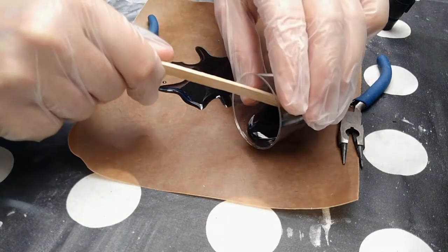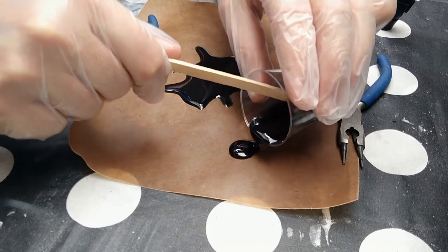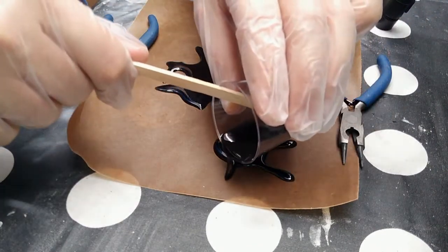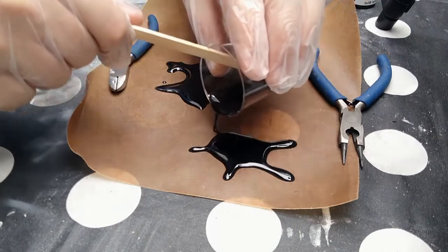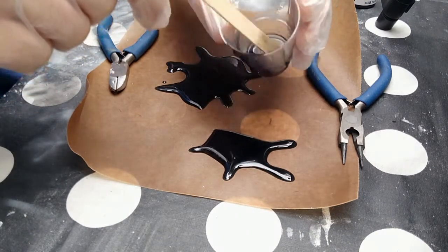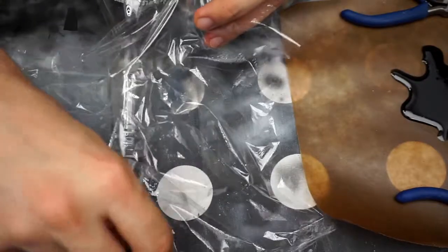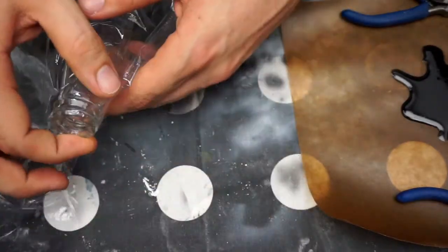I also made an extra piece with the leftover resin which turned out to be a smart thing to do as we will see soon. And I then used some plastic foil to prepare the bottle for the next step.